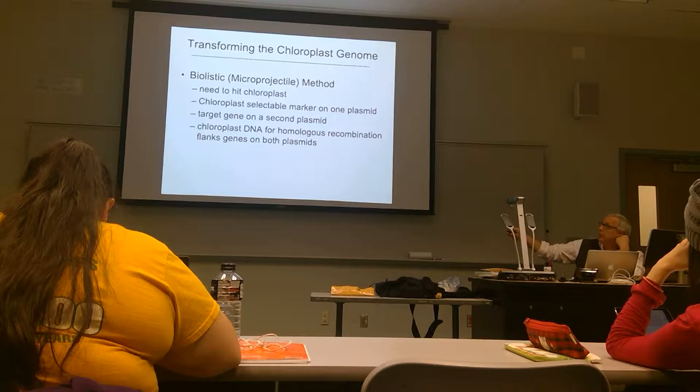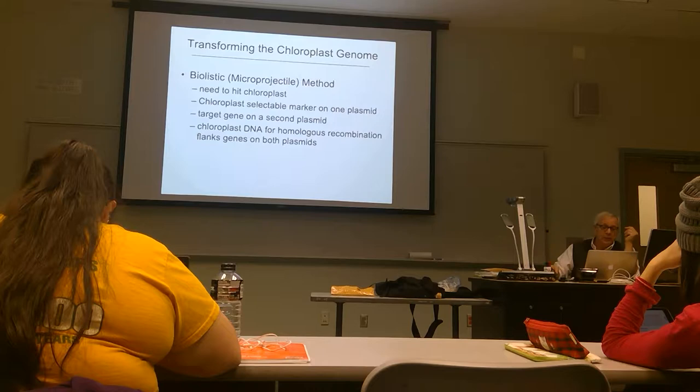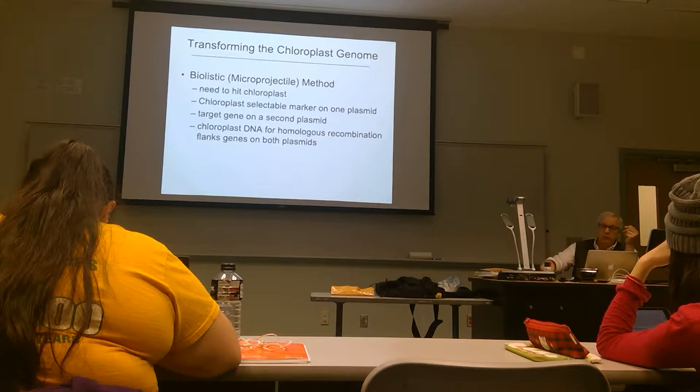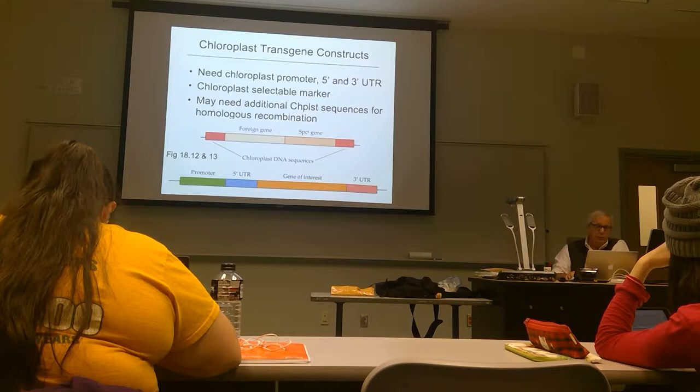We need selectable markers. Typically what's done is you put the chloroplast selectable marker on one plasmid, and the target gene on a second plasmid, then you hope for homologous recombination with the chloroplast DNA on those plasmids to get the gene of interest integrated. Or you can put both genes on the same plasmid. The chloroplast gene — our selectable marker — plus flanking sequences will move it into the chloroplast genome.